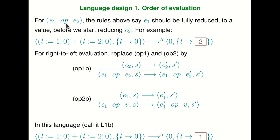Once you've specified this evaluation order, effectful expressions will have a very specific order in which they modify the store. For instance, adding (l := 1; 0) and (l := 2; 0): both return 0 but the first sets the location to 1 and the second to 2. Evaluating this program in five steps, you first set l to 1, return 0, then set l to 2, return 0, giving 0+0. The state goes from 0 to 2 — this is very definite.